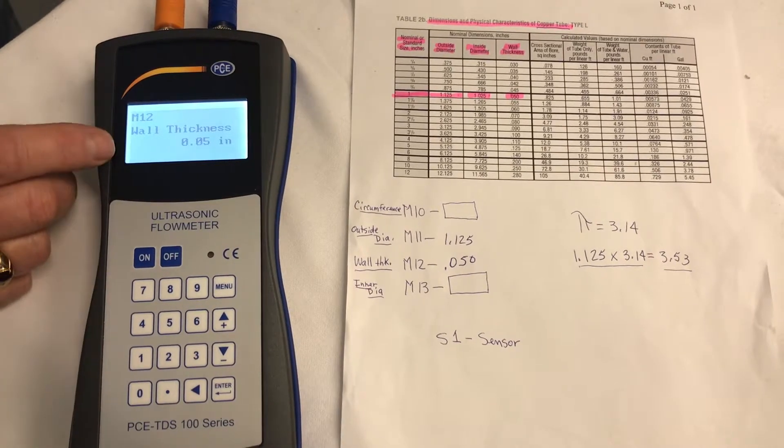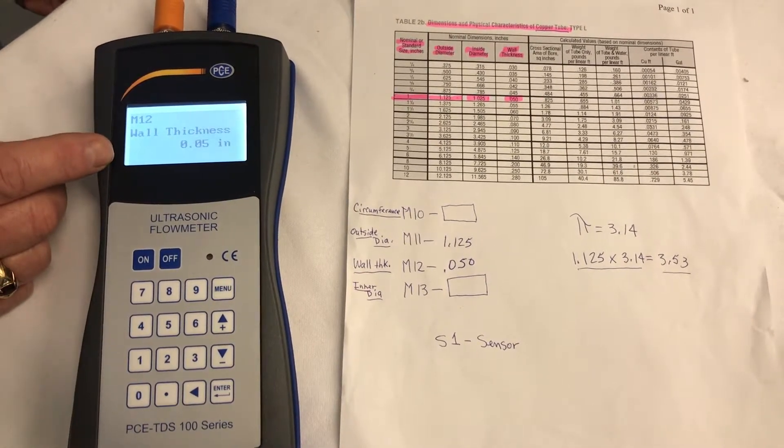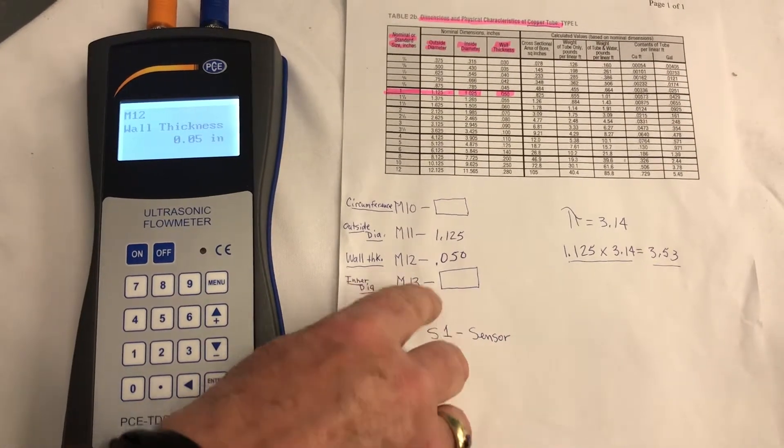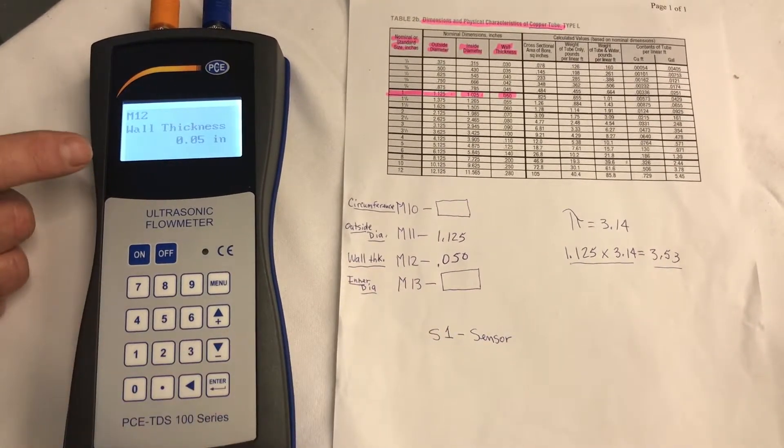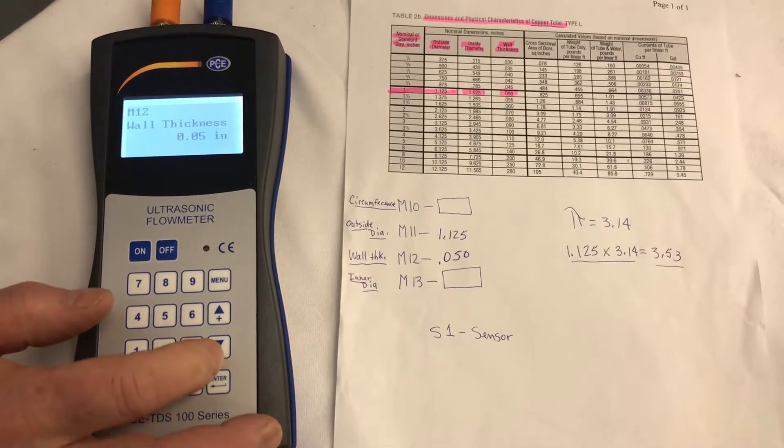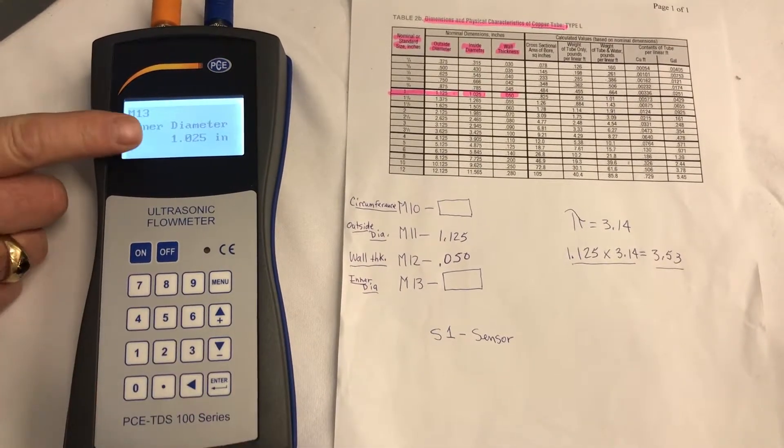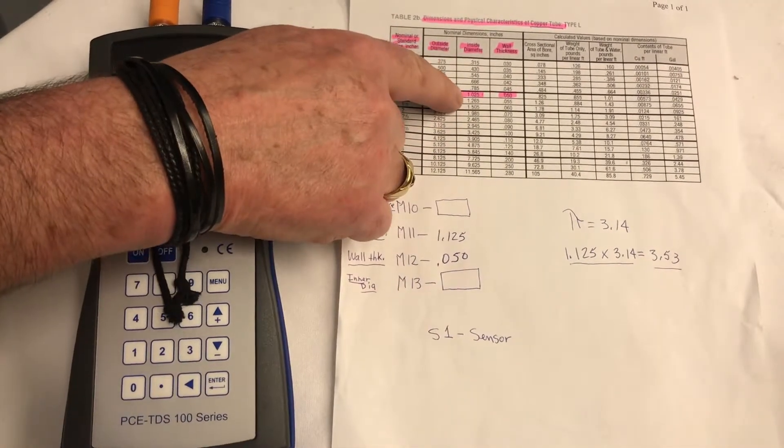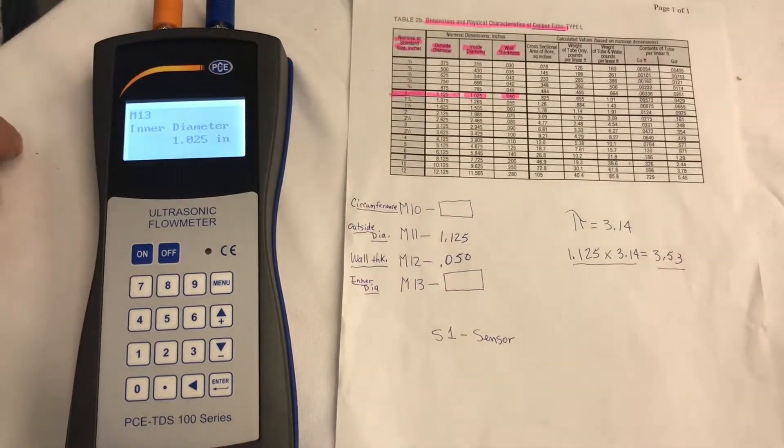Now, since we have .050 inside the meter, that will figure for us the ILM-13, which is the inner diameter. So if we go down from M-12 to M-13, there it is, 1.025. And that's on our chart, 1.025. So it's done.